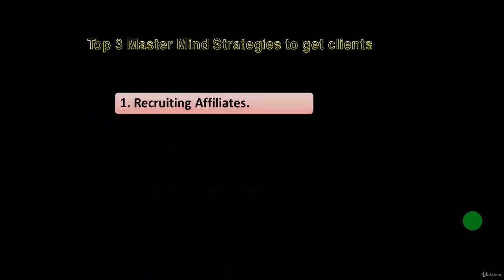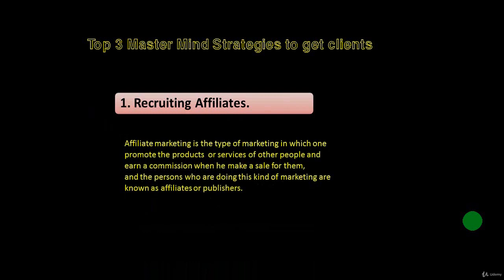The first strategy to get clients for free is to recruit affiliates. Affiliate marketing is the type of marketing in which one promotes the products or services of other people and earns a commission when they make a sale. The people doing this are known as affiliates or publishers. Recruiting affiliates means you will recruit individuals like bloggers and YouTubers on your website as affiliates. They will promote your services on their blogs or YouTube videos, and you will not pay them anything until they bring you a sale — only a commission on a successful sale.